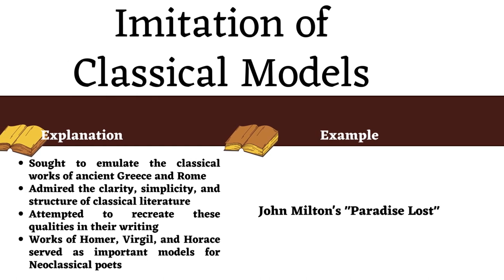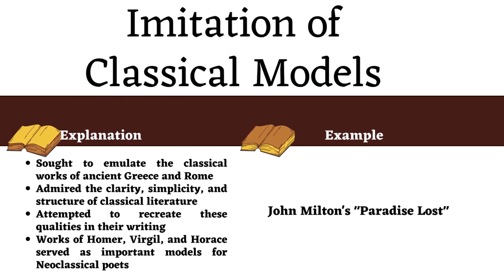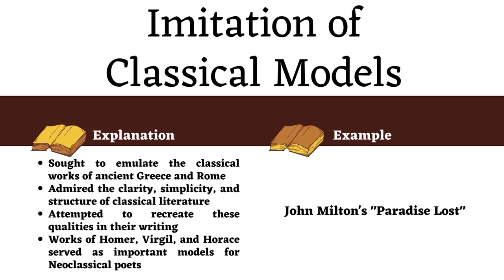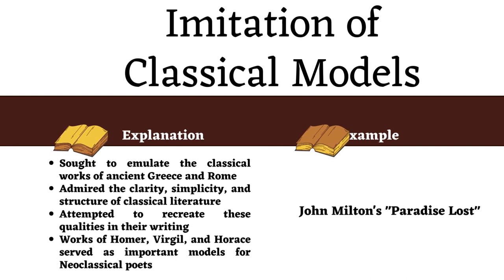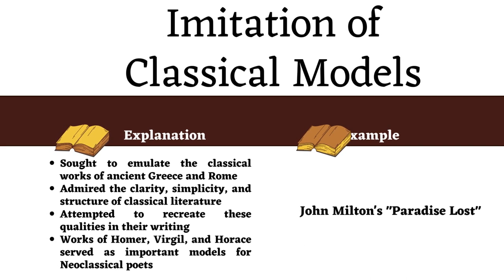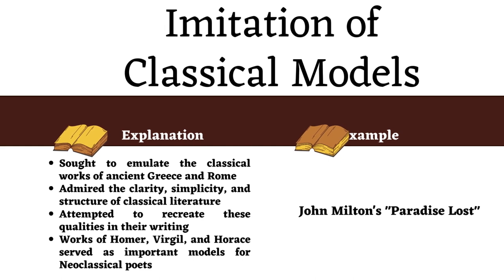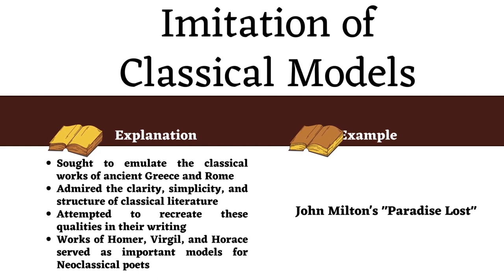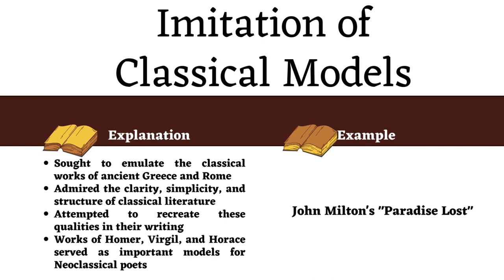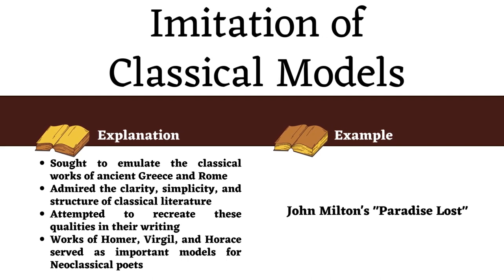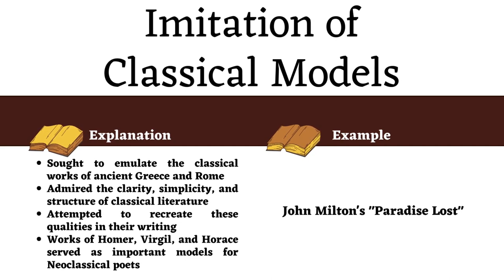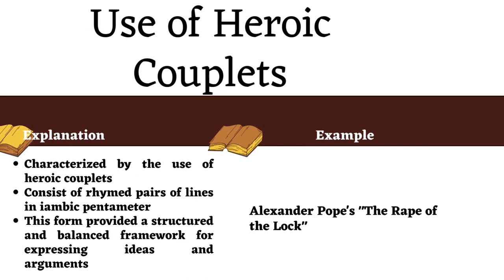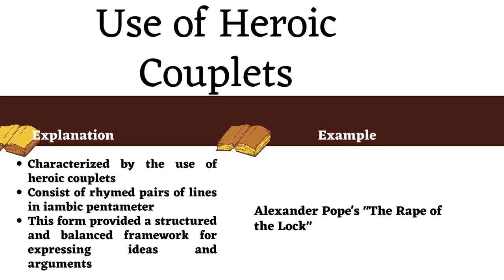Imitation of classical models: neoclassical writers often sought to emulate the classical works of ancient Greece and Rome. They admired the clarity, simplicity, and structure of classical literature and attempted to recreate these qualities in their writing. The works of Homer, Virgil, and Horace served as important models for neoclassical poets. John Milton's Paradise Lost is a prime example, drawing heavily from classical epic poetry, particularly the works of Virgil and Homer.